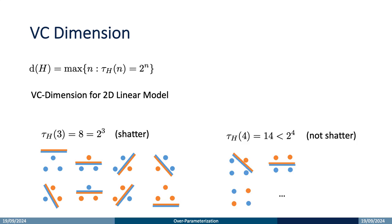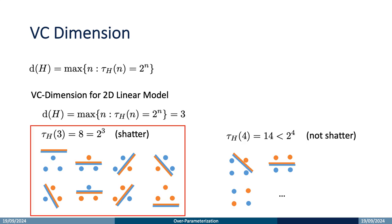However, when n equals 4, the growth function is 14, which is less than 16 (2 to the power of 4). This means a 2D linear model cannot shatter four points. The bottom row of the right figure illustrates a scenario where a 2D linear model cannot assign classifications — the blue points are in the upper left and bottom right, while the orange points are in the bottom left and upper right. Since the 2D linear model can shatter three points but cannot shatter four, its VC dimension is 3.